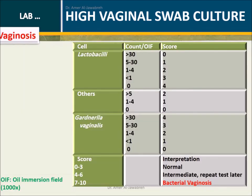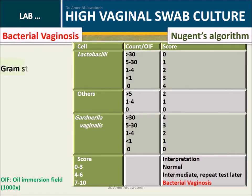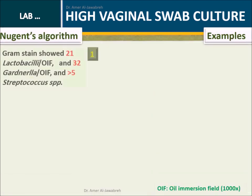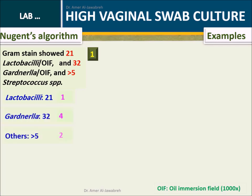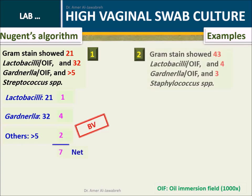Bacterial vaginosis is assessed using Nugent's algorithm, which is based on gram stain. Examples one and two are provided to illustrate scoring using Nugent's algorithm.